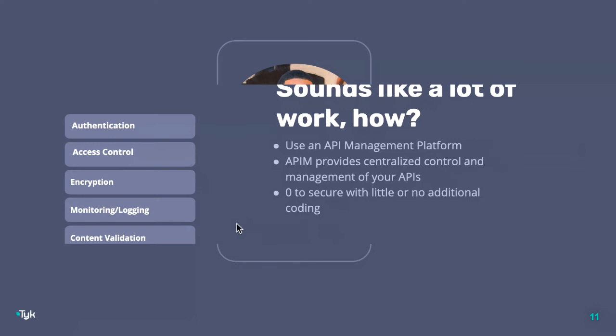Sounds like a lot of work — authentication, access control, encryption, monitoring, et cetera. The key way to get all of that done easily is by using an API management platform. API management tools provide centralized control and management of your APIs: a central place where you can control your authentication, access control, encryption methods — everything we just discussed in a one-stop shop. Modern tools allow you to go from zero to secure with little or no additional coding. I'm partial to Tyke, but I believe it does a great job providing these tools to secure and protect your APIs.